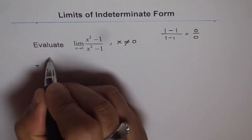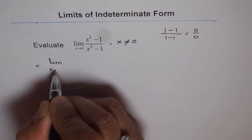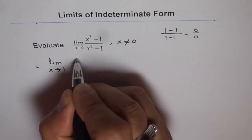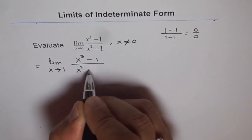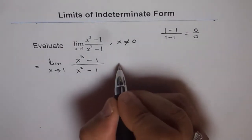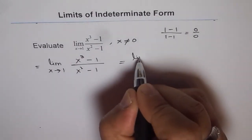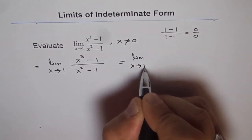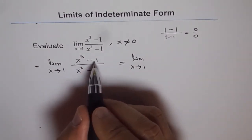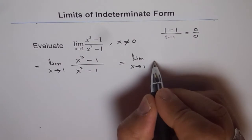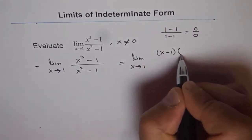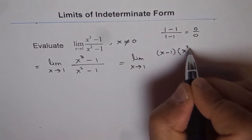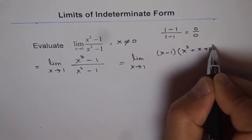So we have this expression as limit x approaches 1, x cube minus 1 over x square minus 1. Now, it could be written as limit x approaches 1. So we'll apply a cube minus b cube formula. So we get in the numerator a minus b, which is x minus 1 times x square plus x plus 1.